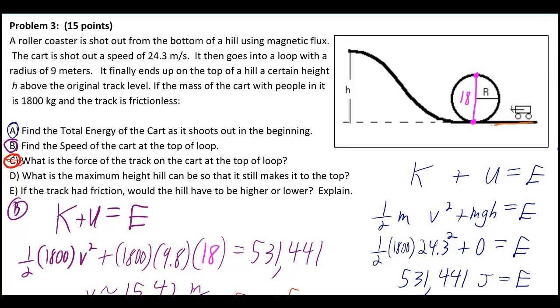So then it goes into this loop, like so, and it's going to go to the top of the hill. It finally ends up on the top of a hill, a certain height h above the original track level. If the mass of the cart with people in it is 1800 kilograms and the track is frictionless.